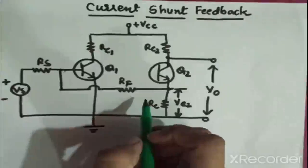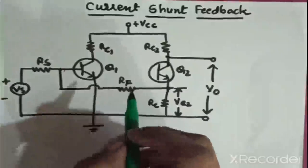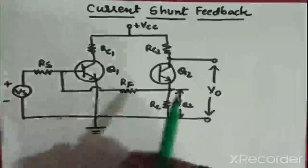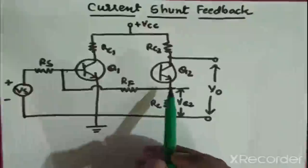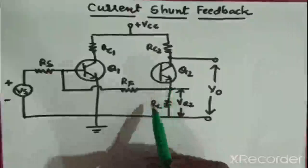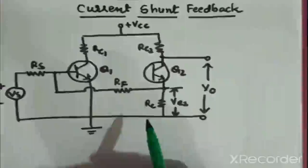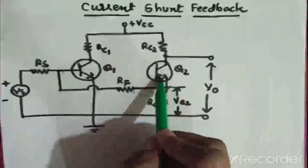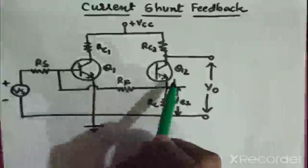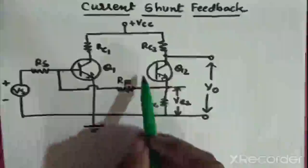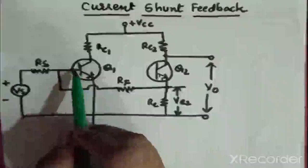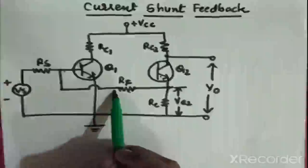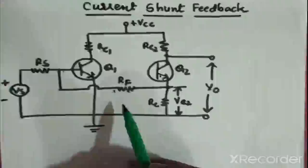This is the circuit diagram of current shunt feedback. The figure shows the cascaded connection of two transistors with feedback from the emitter of the second transistor to the base of the first one through the resistor RF. Here there are two transistors Q1 and Q2 in a cascaded connection.